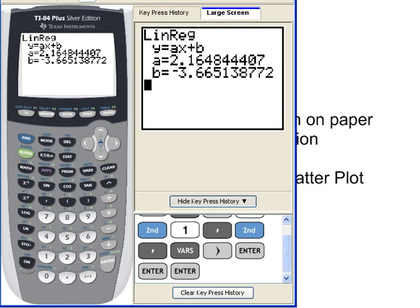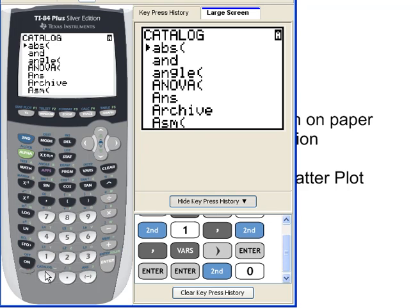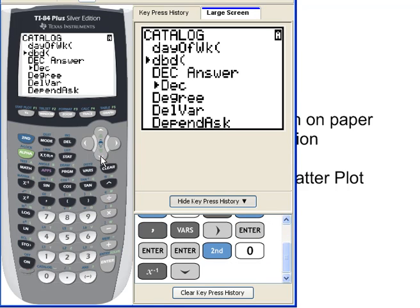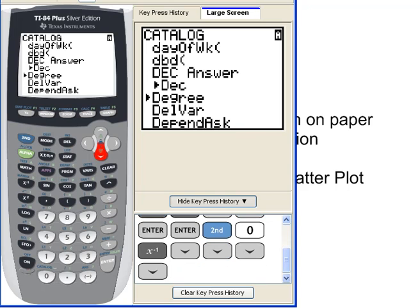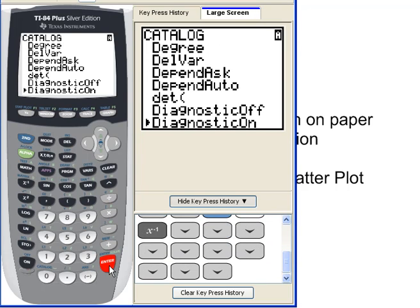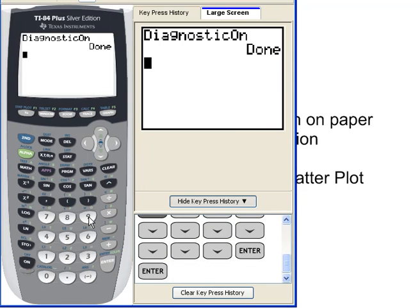When I hit enter, I get the regression line. You can see here, A is the slope. B is the Y-intercept. I can also get the correlation by doing the following. Hitting second, catalog. Notice the A here. So, I hit the D to move me to the D. And I want to scroll down until I get diagnostics on. There it is. I hit enter on diagnostics on. I hit enter again, and it's done.